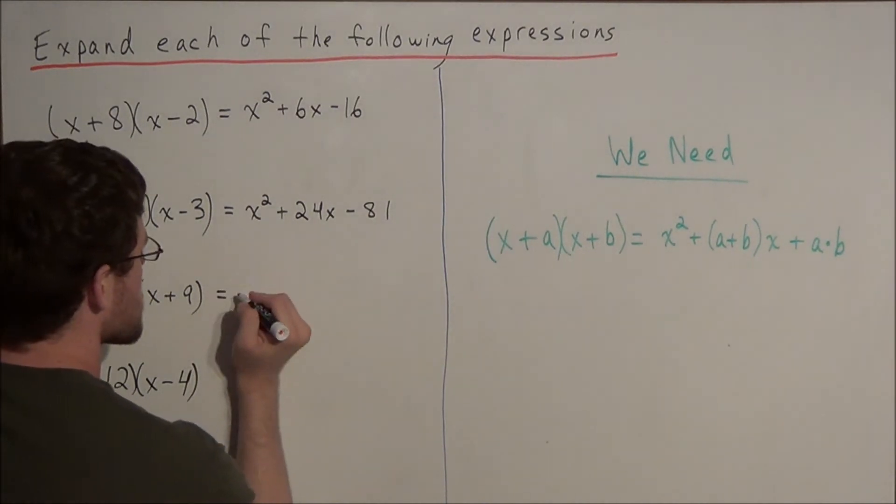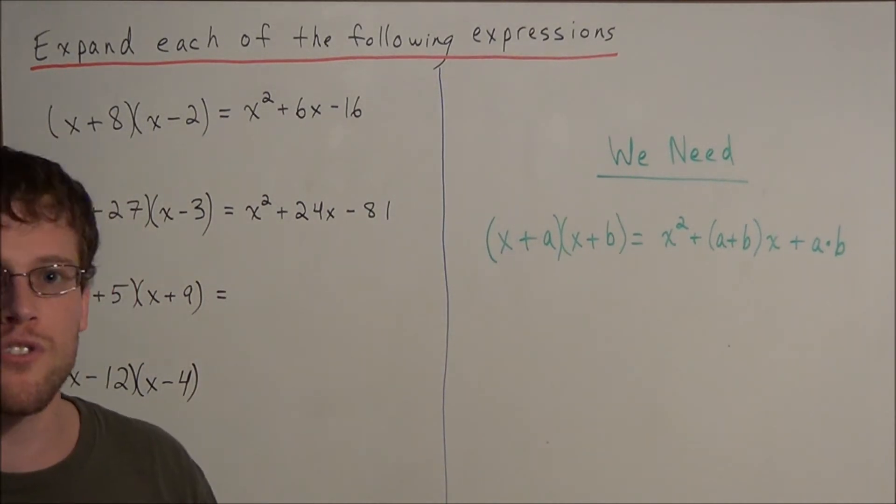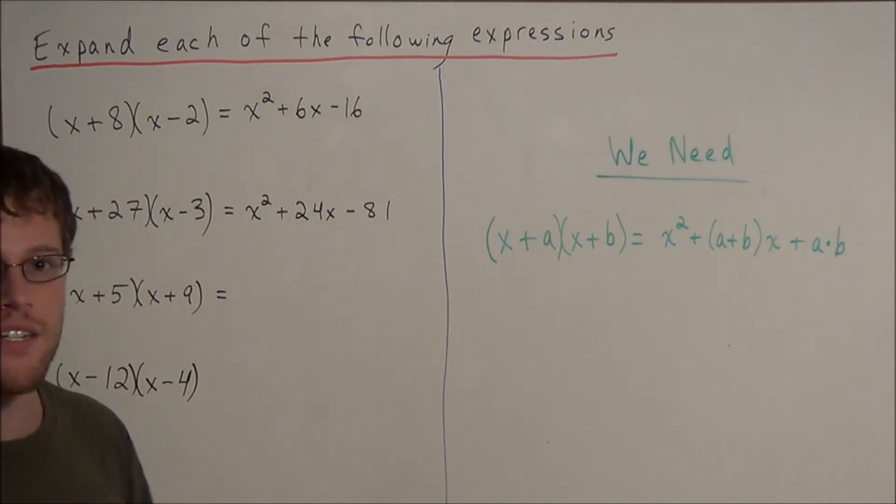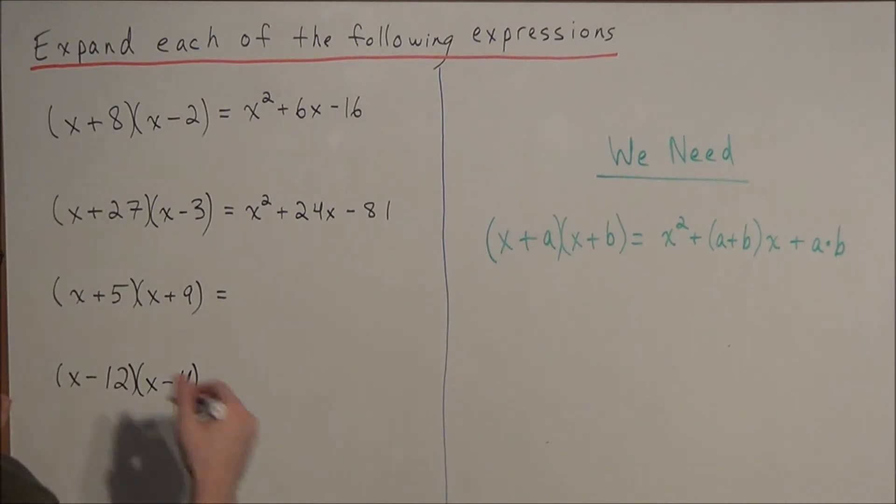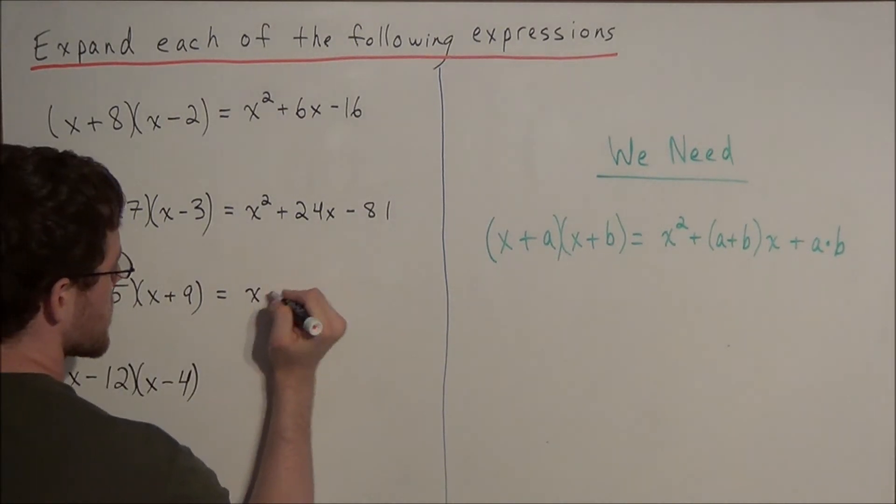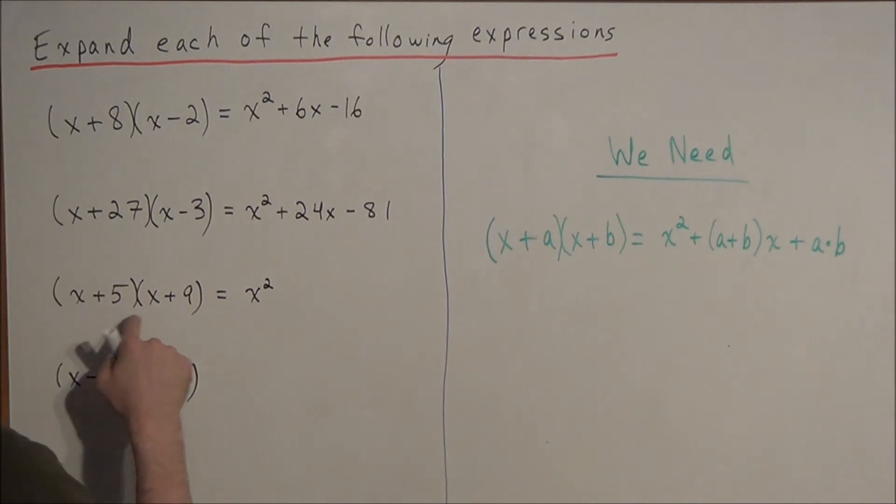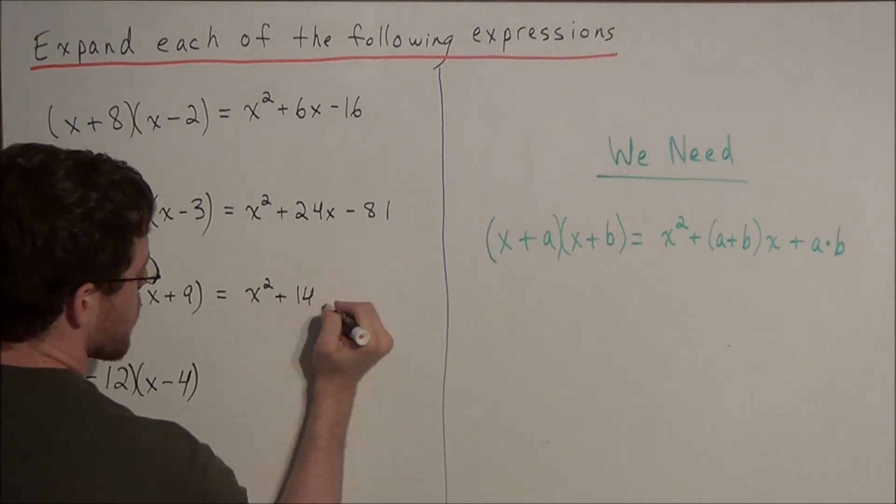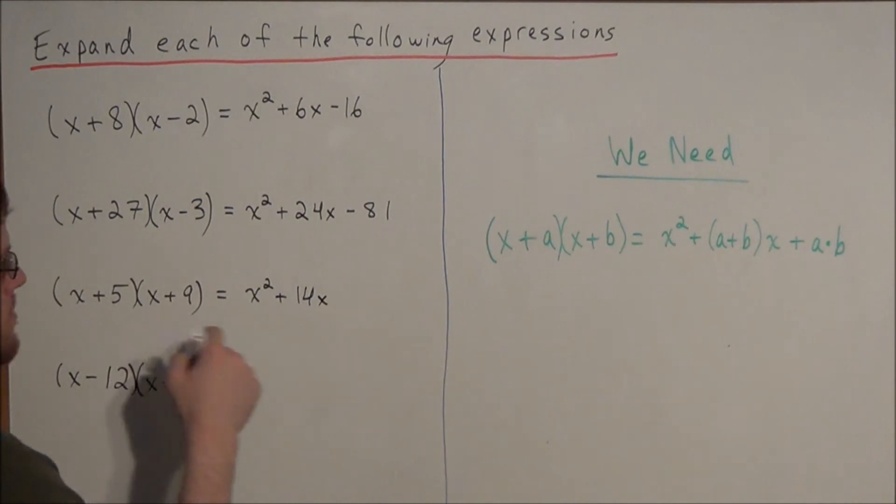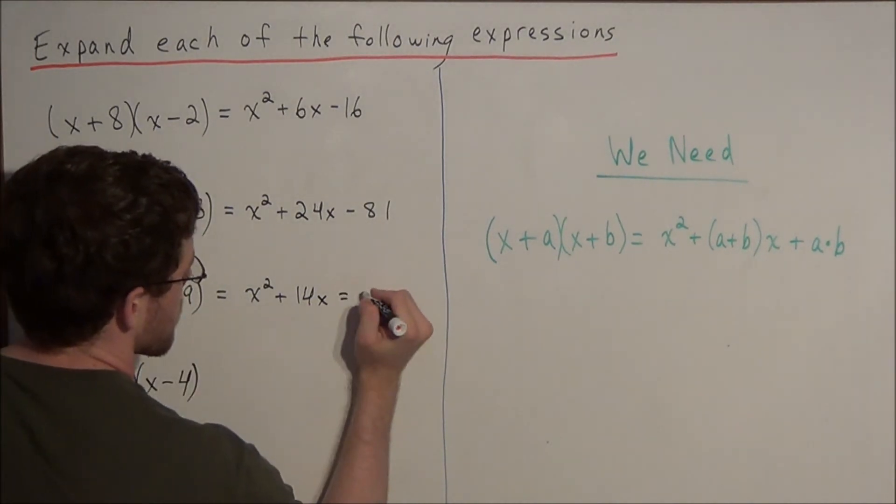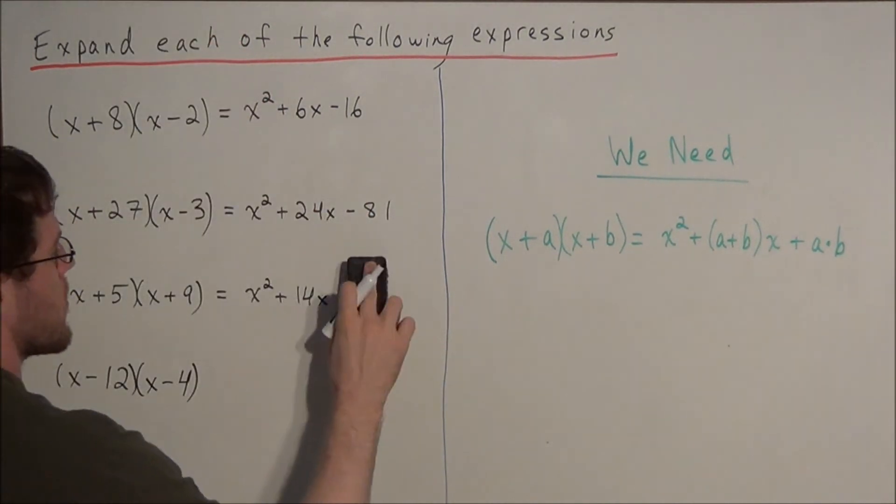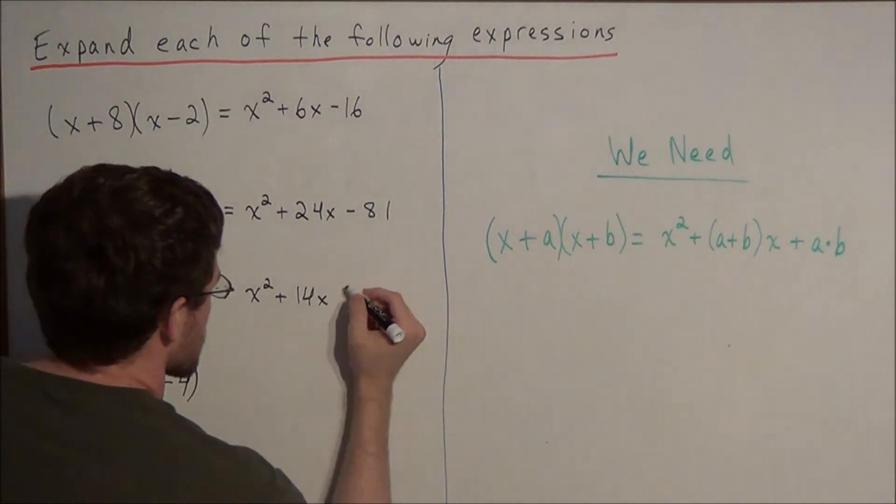And now you'll begin to see that instead of foiling every time, once you build fluidity, you want to use this technique because it's really going to speed things up. So we have x times x is x squared. And now the middle term, 5 plus 9 is 14, so we have a plus 14x. And now 5 times 9 is a positive 45. So we have x squared plus 14x plus 45.